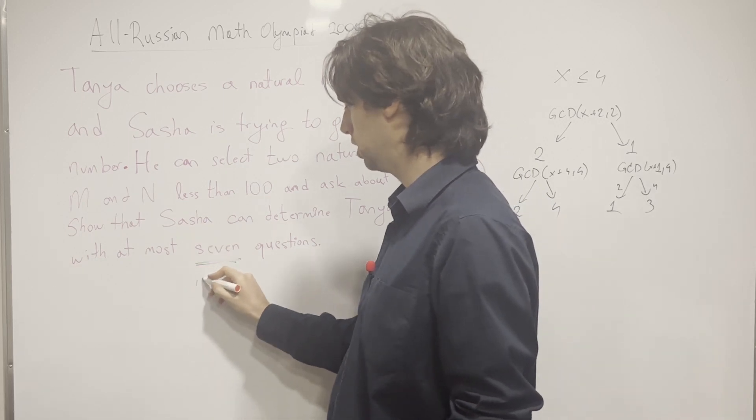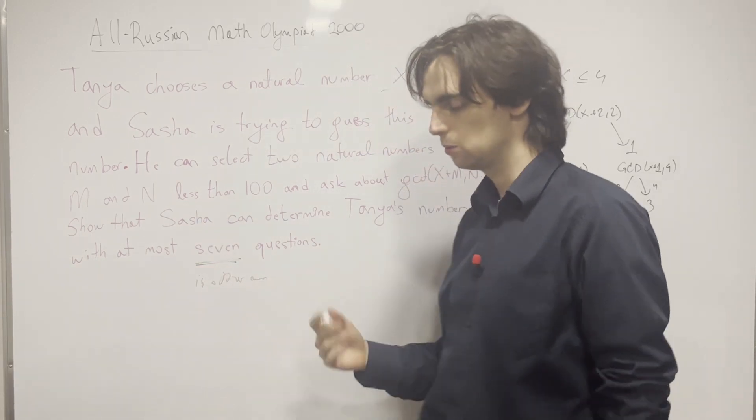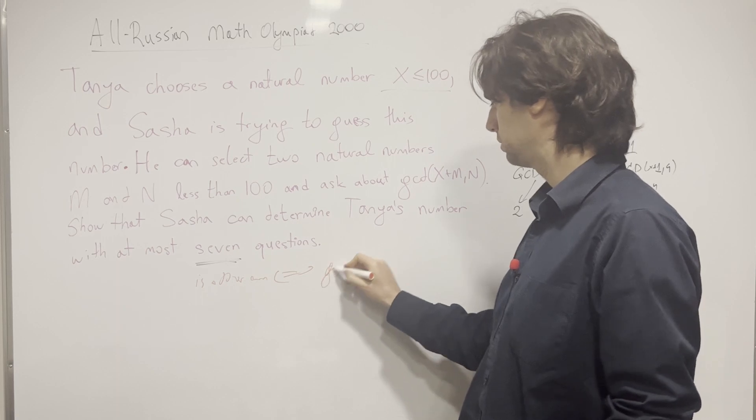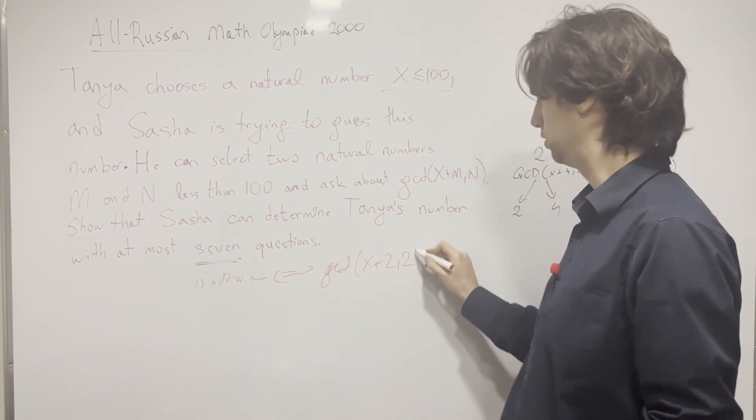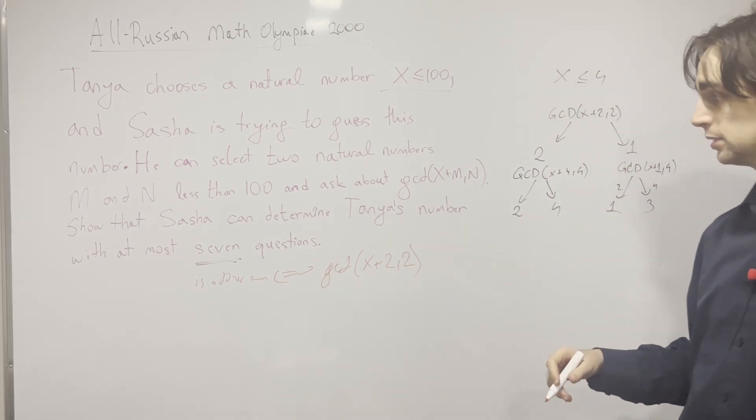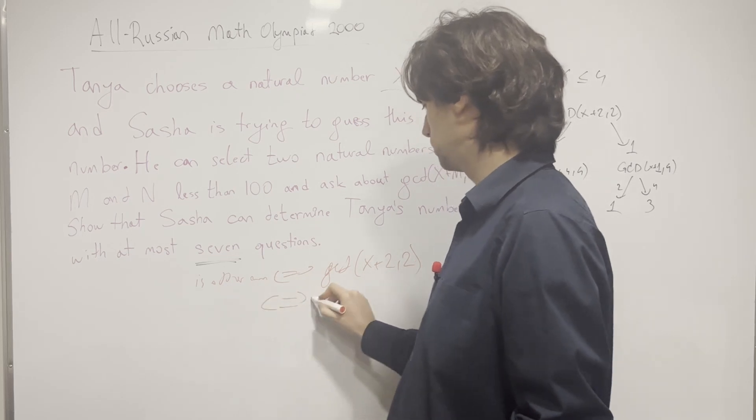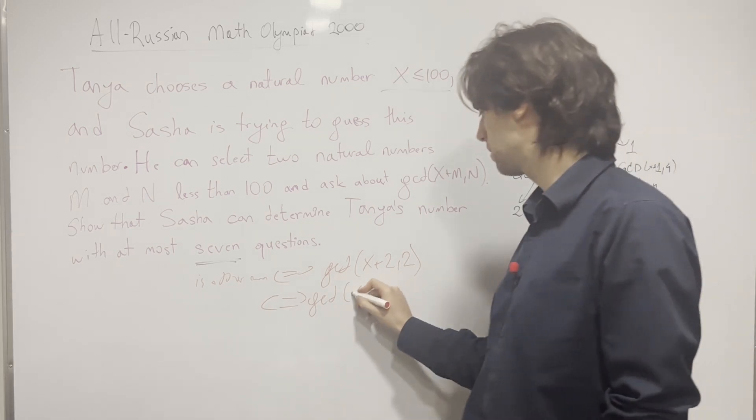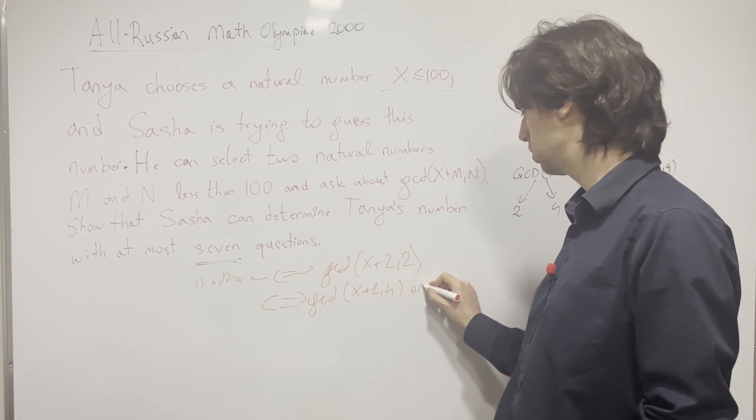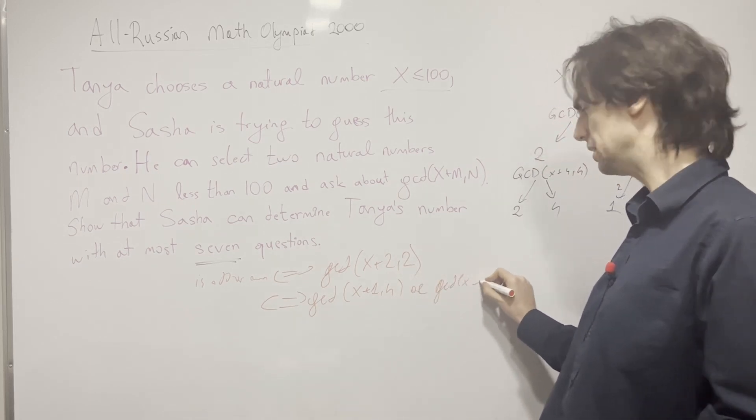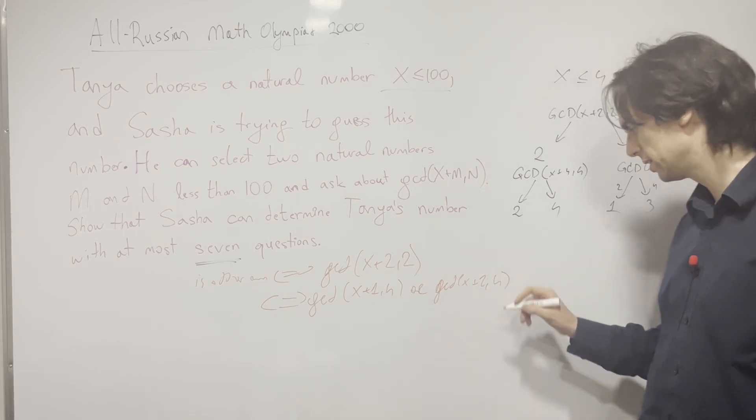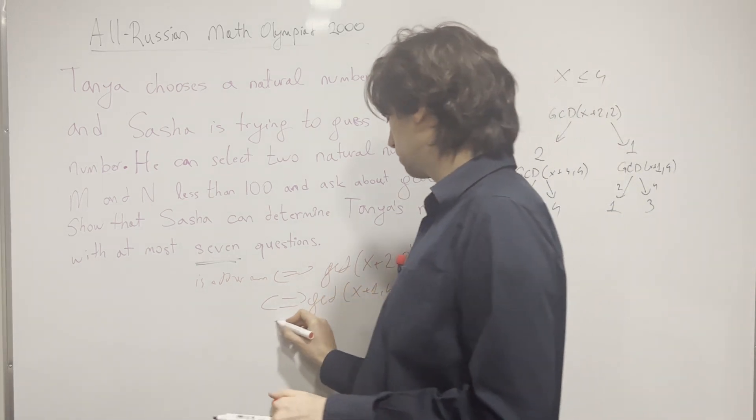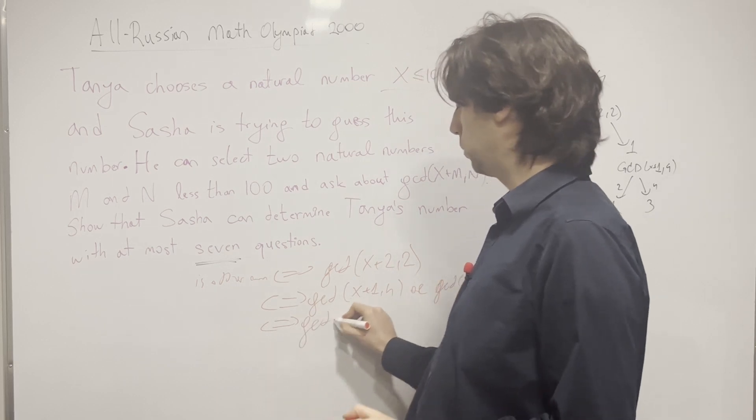The first question is: is it odd or even? Which is really equivalent to asking: give me the GCD of X plus 2 and 2. Then to understand what it is with respect to 4k, give me the GCD of either X plus 1 and 4, or the GCD of X plus 2 and 4. Maybe it's easier to write this down if it's X plus 4.